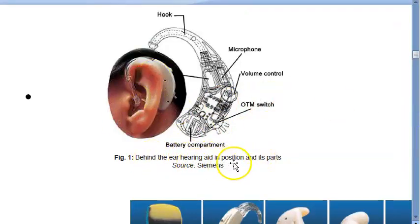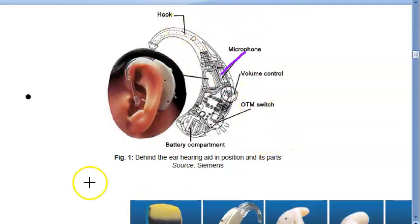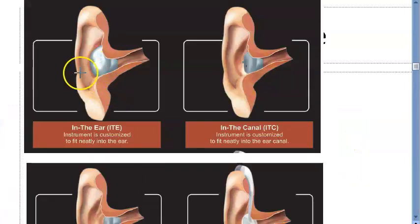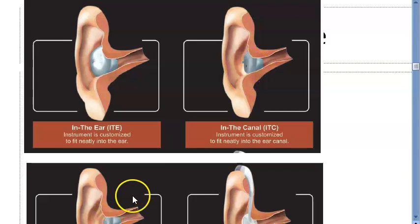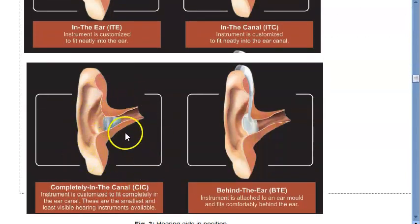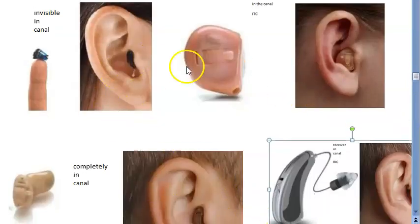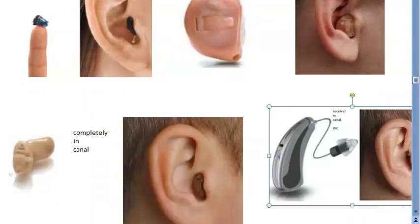Looking at images of the behind-the-ear hearing aid in position and its parts — the microphone is here. Here are more images: body worn, behind the ear, in the ear, in the canal, and completely in the canal. The in-the-ear type is slightly external; the in-the-canal sits deeper; and completely in the canal sits entirely inside.